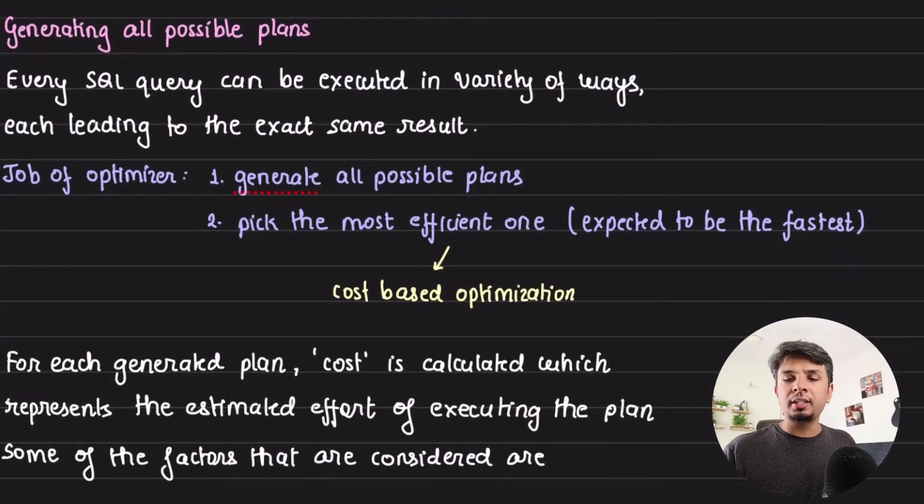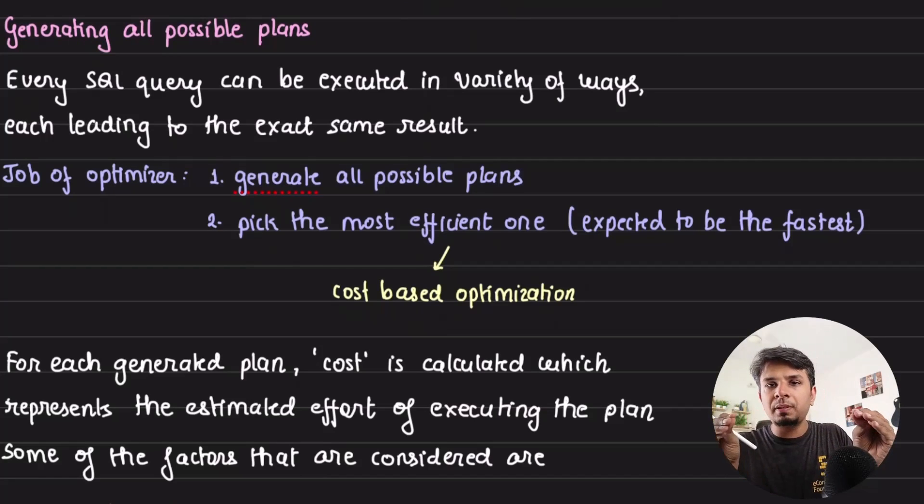To generate the most optimal plan, it first needs to generate all possible plans through which a SQL query can be executed. For example, given a SQL query, there is not just one way to execute it. There will be multiple ways or multiple query plans which, when executed, would result in the same result.